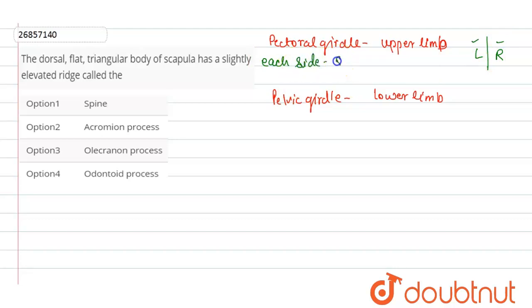Each side of the pectoral girdle has the scapula and clavicle present. Here is the scapula bone. The scapula bone's dorsal side is flat and triangular. Its position is between the second to seventh ribs. The elevated ridge present in this area, we call the spine.